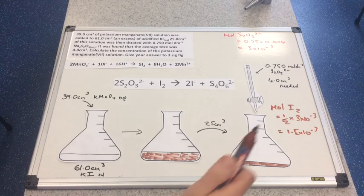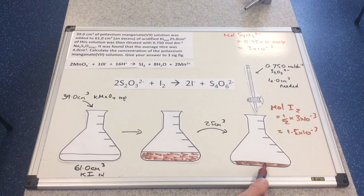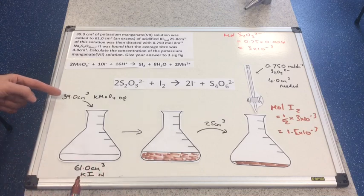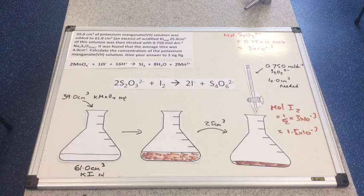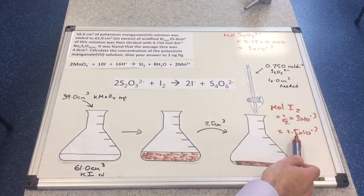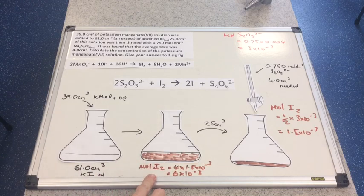Here's the first tricky part: we have 1.5 × 10⁻³ mol of iodine in the 25 cm³ aliquot. Remember, we took 25 cm³ out of the full solution. The original solution was made from 39 cm³ and 61 cm³, giving a total volume of 100 cm³. Since we only used 25 cm³ — a quarter — we need to scale up, so the moles of iodine in the full flask is 6 × 10⁻³ mol.